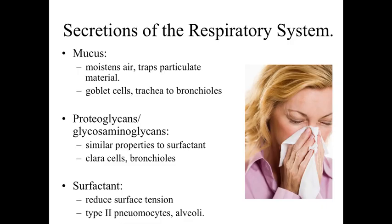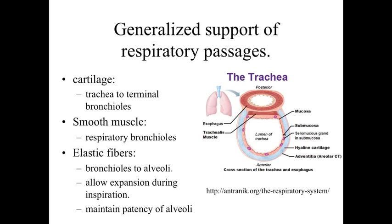Looking at secretions within the respiratory system: starting in the conducting portion, a lot of mucus is produced to moisten the air and trap particulate material. This is produced by goblet cells from the trachea down to about the level of the bronchioles. Proteoglycans and glycosaminoglycans — with properties similar to surfactant — minimize surface tension at the level of the bronchioles, produced by Clara cells. Surfactant is a very important mechanism for reducing surface tension to maintain the patency and inflated characteristics of the thin lung regions. In the respiratory region, surfactant is produced by type 2 pneumocytes.